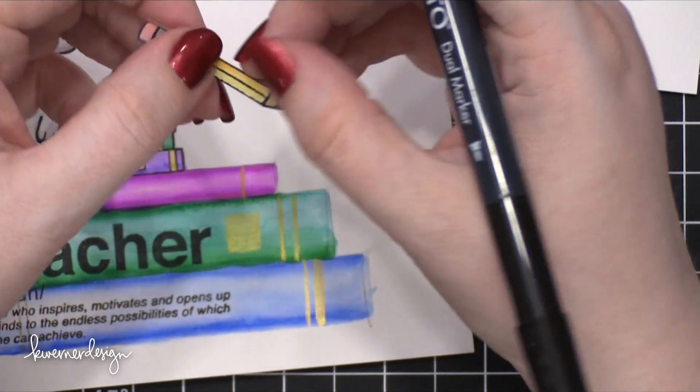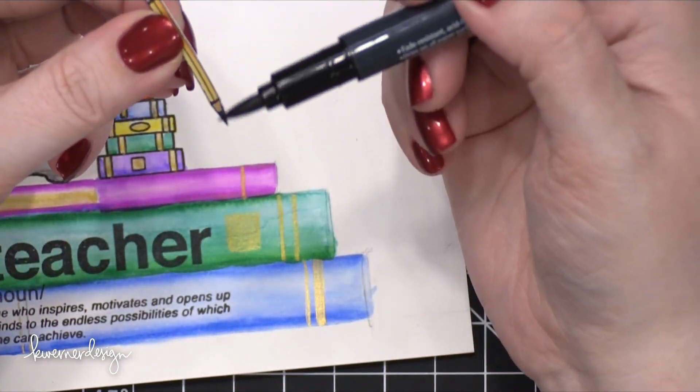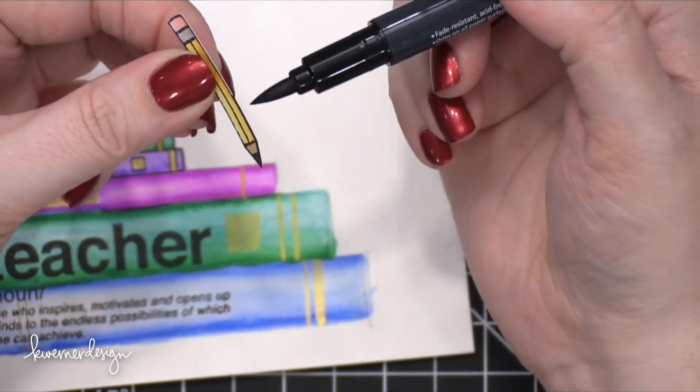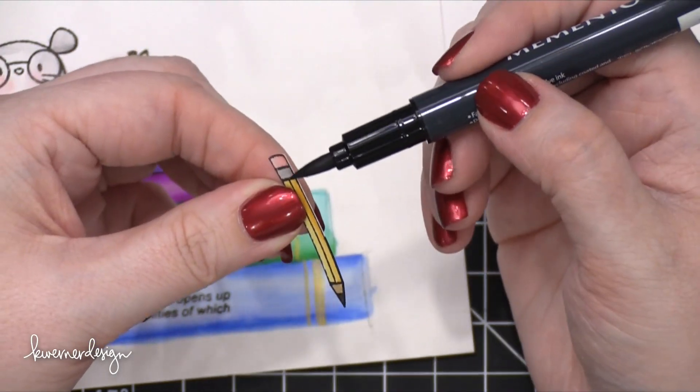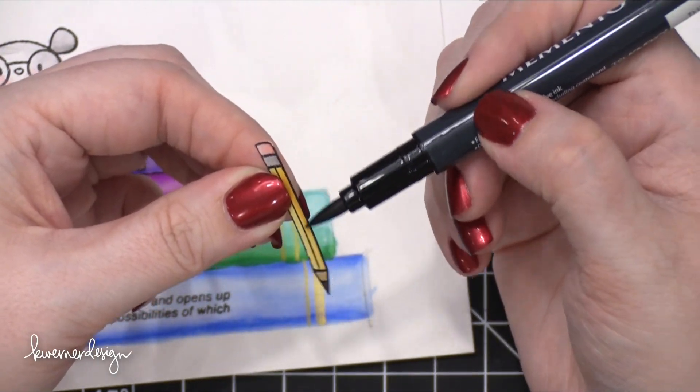I also painted the edges on the pencil that I cut out. This is going to help the pencil really blend in and look like it belongs with the rest of the scene here.